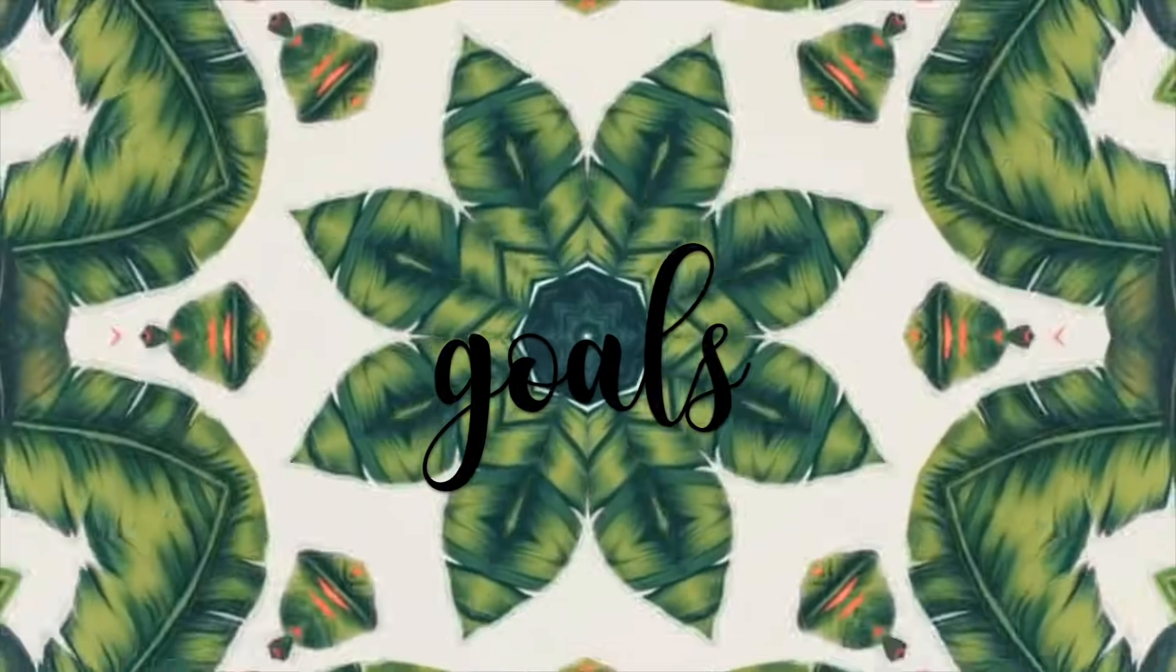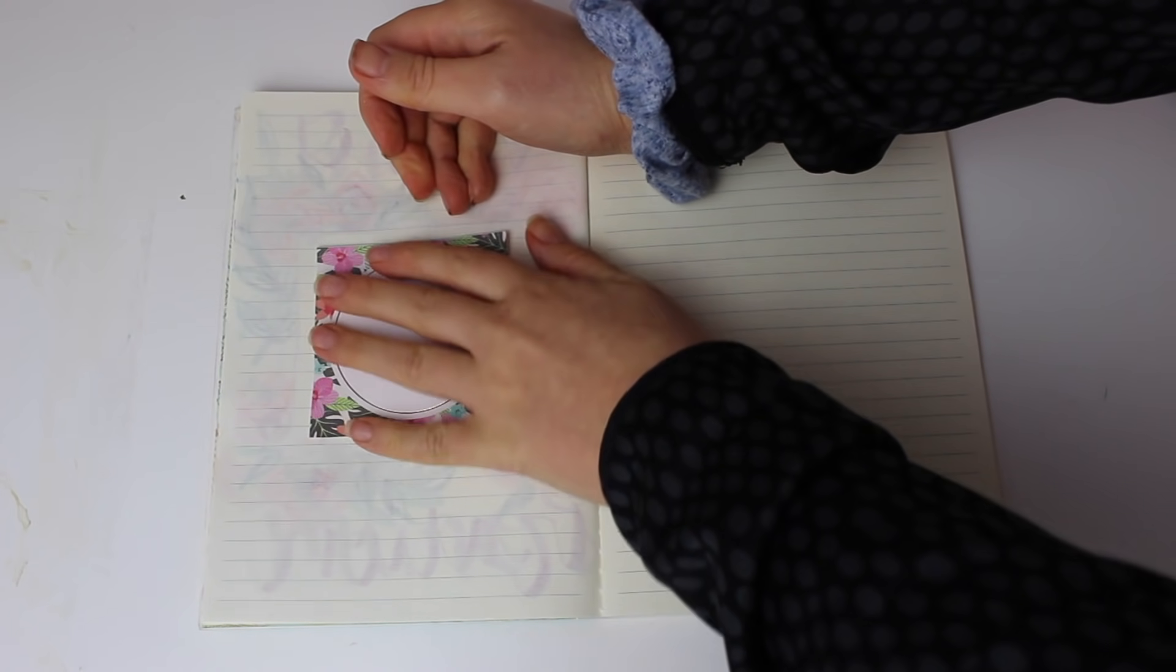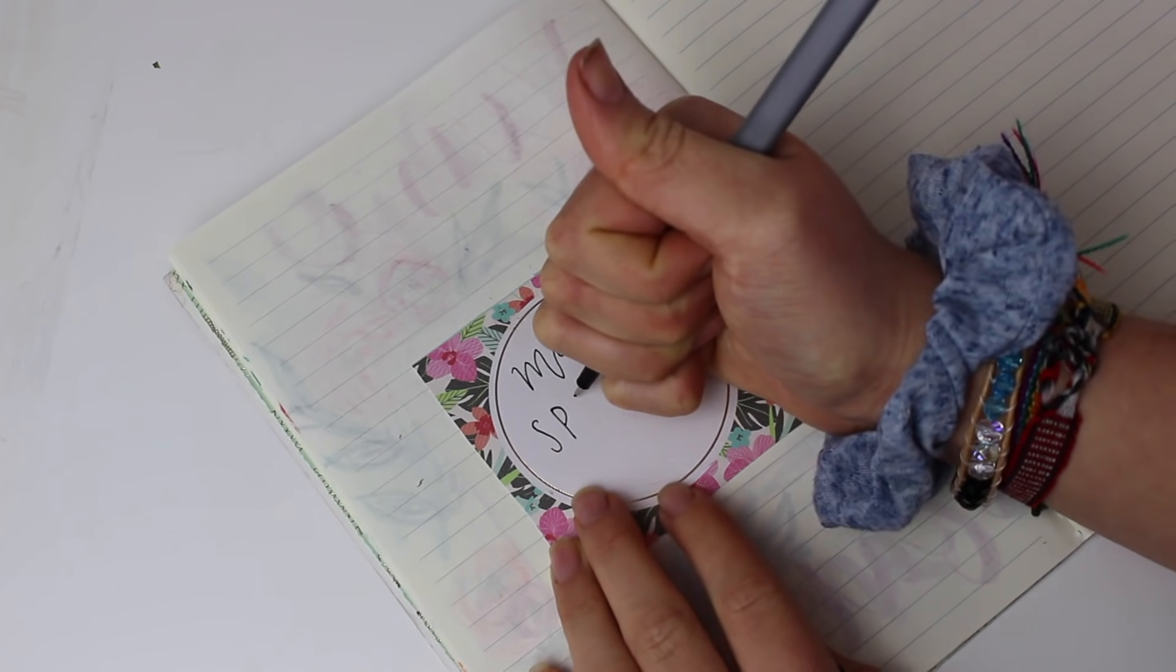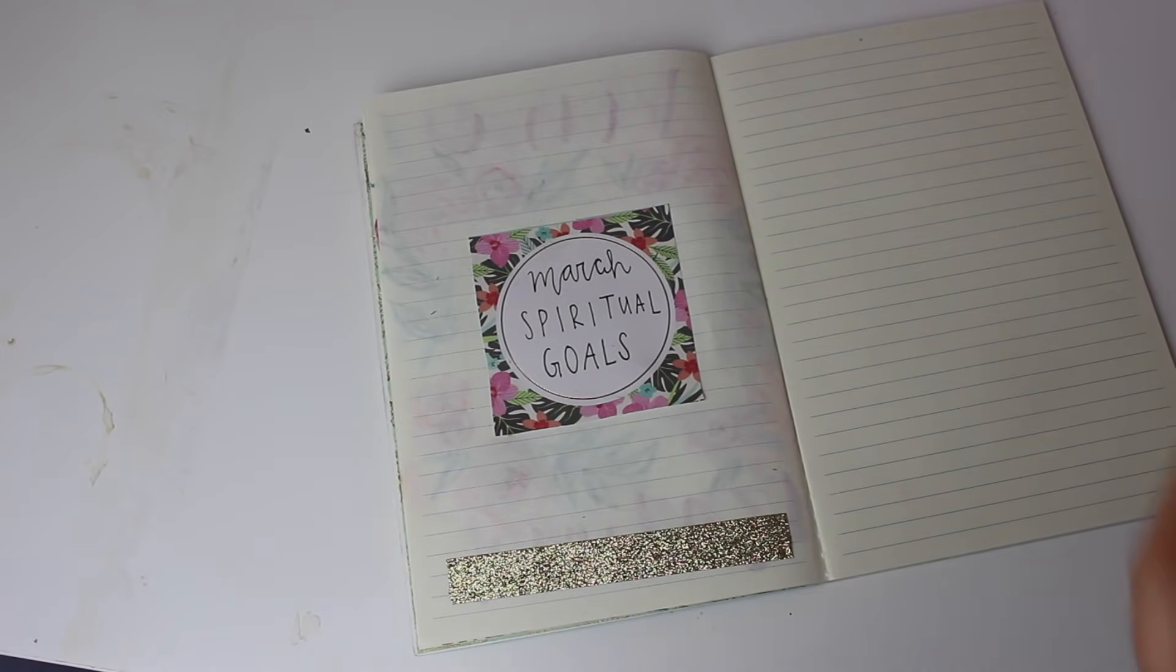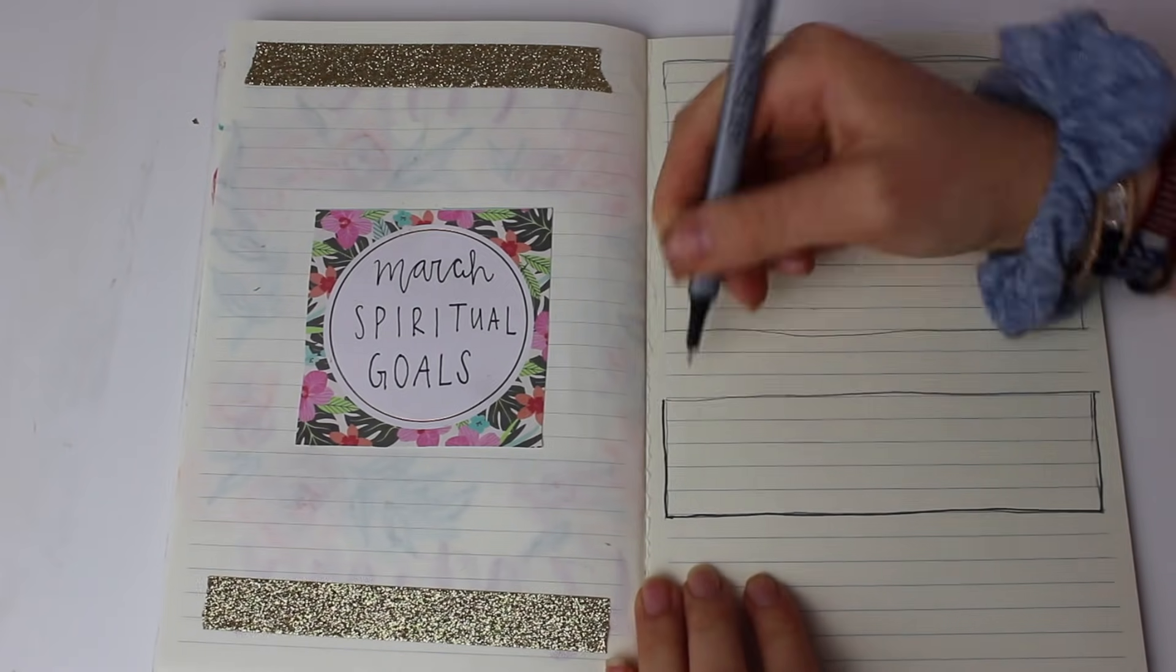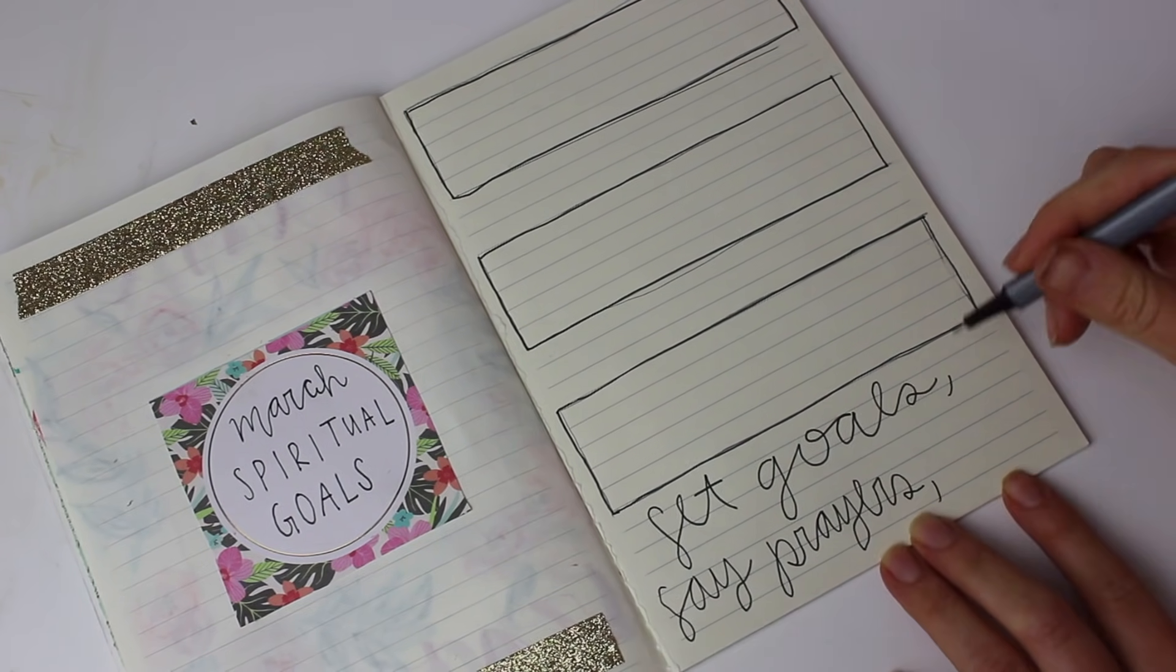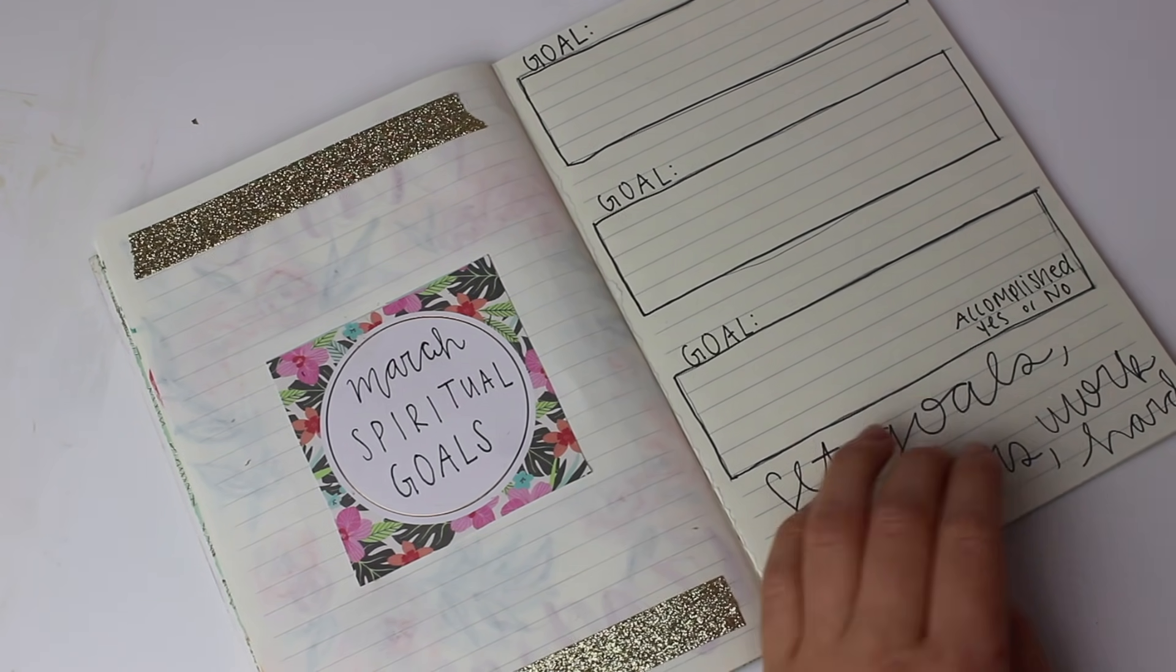So the next section is goals. And it's actually like spiritual goals. So how do you want to grow spiritually in this next month? Like I said, it's super important to be writing down your goals if you actually want to accomplish them. And for example, one of my goals would be, I want to memorize two Bible verses in a month. So I would write that down. And then by the end of the month, hopefully I'll be able to check off the yes for was the goal accomplished?